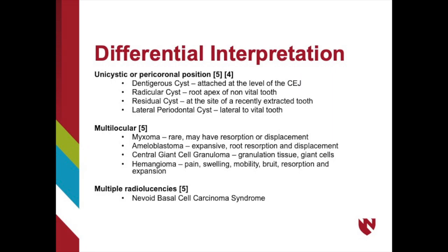The most common presentation of the OKC is in the posterior mandible or maxilla. If the lesion is multilocular, you'll want to consider the MACHO differential diagnosis. This includes the myxoma, ameloblastoma, central giant cell granuloma, and hemangioma. Myxomas are rare and more likely to have resorption or displacement of roots. Ameloblastomas are very expansive and will also have resorption or displacement. A central giant cell granuloma will show granulation tissue and giant cells upon histopathological examination. A hemangioma will have pain, swelling, mobility, bruit, and resorption and displacement of roots.